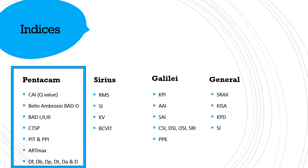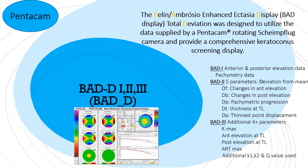We'll do the Pentacam indices one by one. Pentacam indices are displayed in a separate printout which looks like this, and it's called the BADD display — Belin-Ambrósio Enhanced Ectasia display, or BADD.